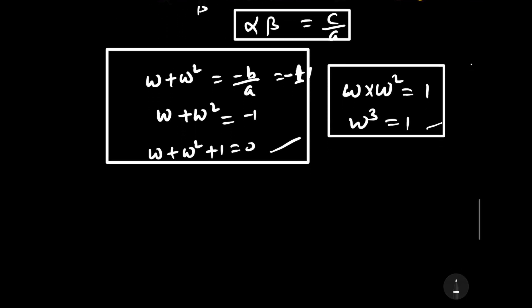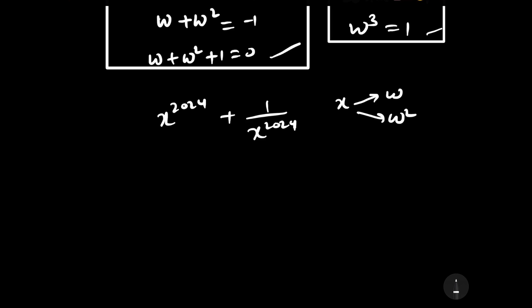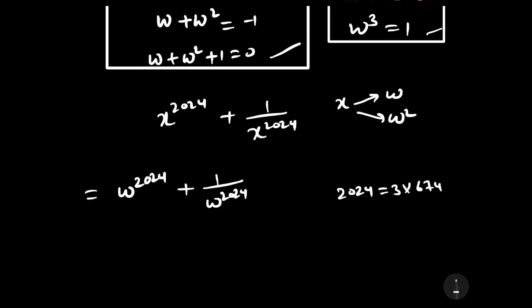Now we can easily calculate the value of x to the power 2024 plus 1 upon x to the power 2024. Since x can either be omega or omega squared, let us put x equals omega. Then we write omega to the power 2024 plus 1 upon omega to the power 2024. Note that 2024 can be written as 3 times 674 plus 2, so we write omega to the power 2024.